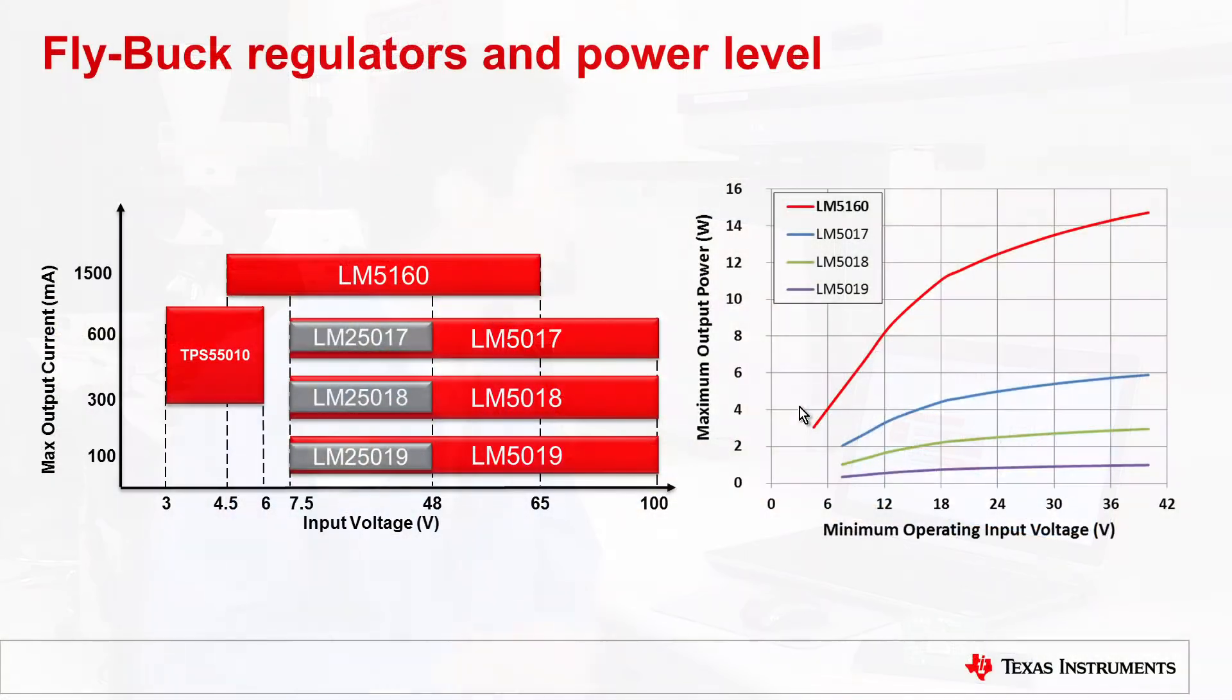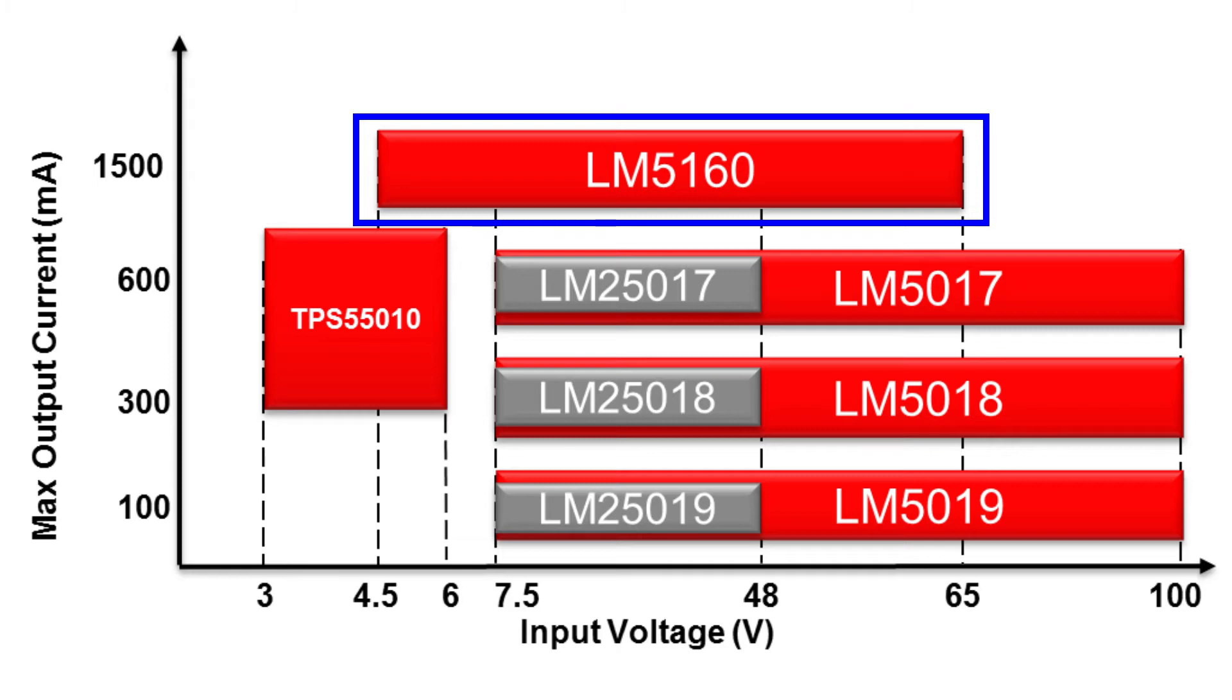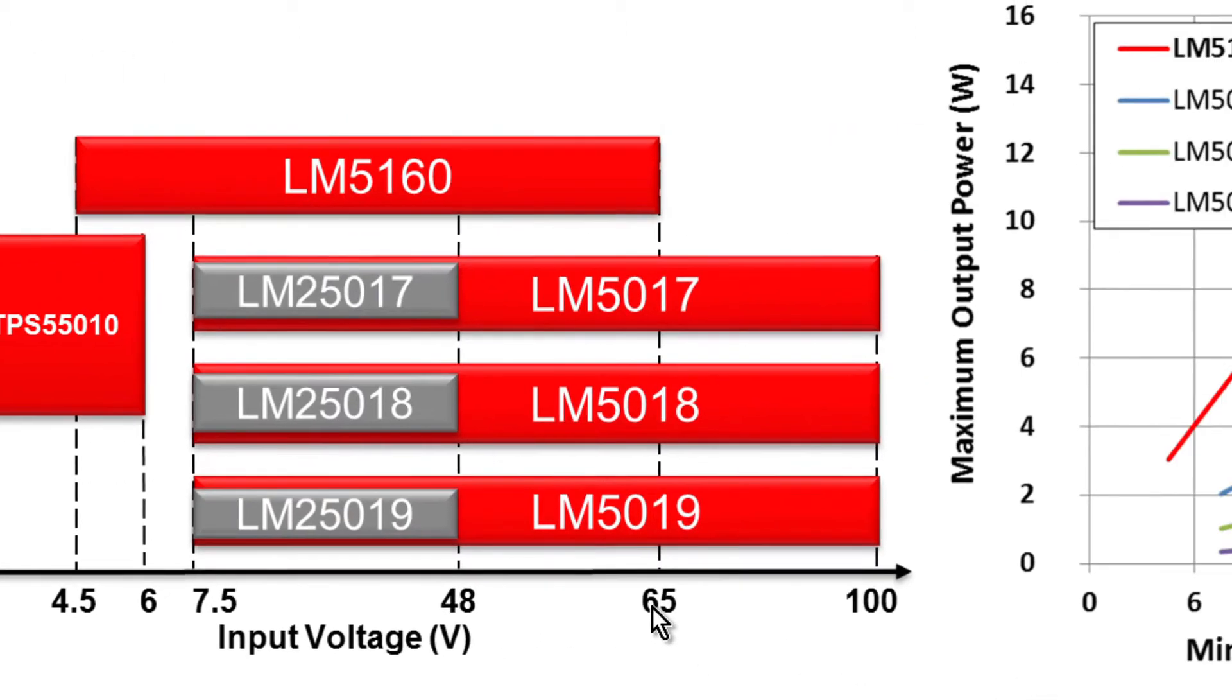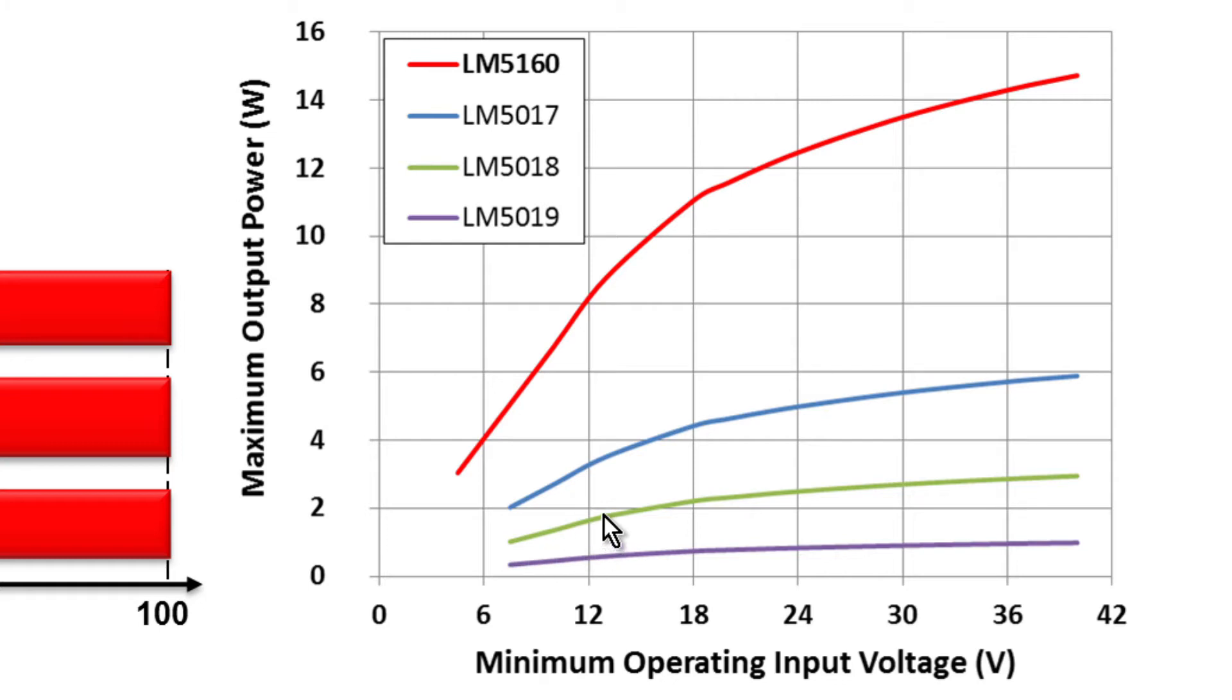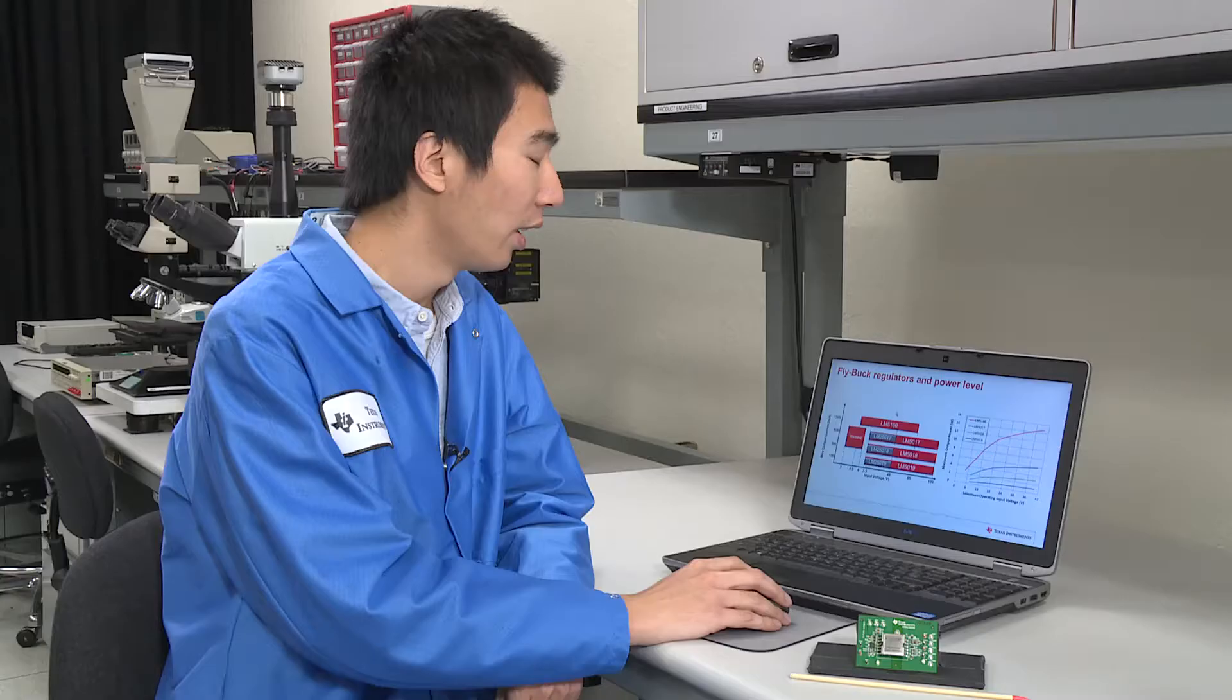For the flyback regulator family, the LM5160 is the latest addition to TI's flyback regulator family. It increased the output current capability to 1.5 amps and still has the 4.5 to 65 volt wide VIN range. By increasing the current capability, the flyback converter using LM5160 can have a huge increase in output power level and can achieve 15 watts power.